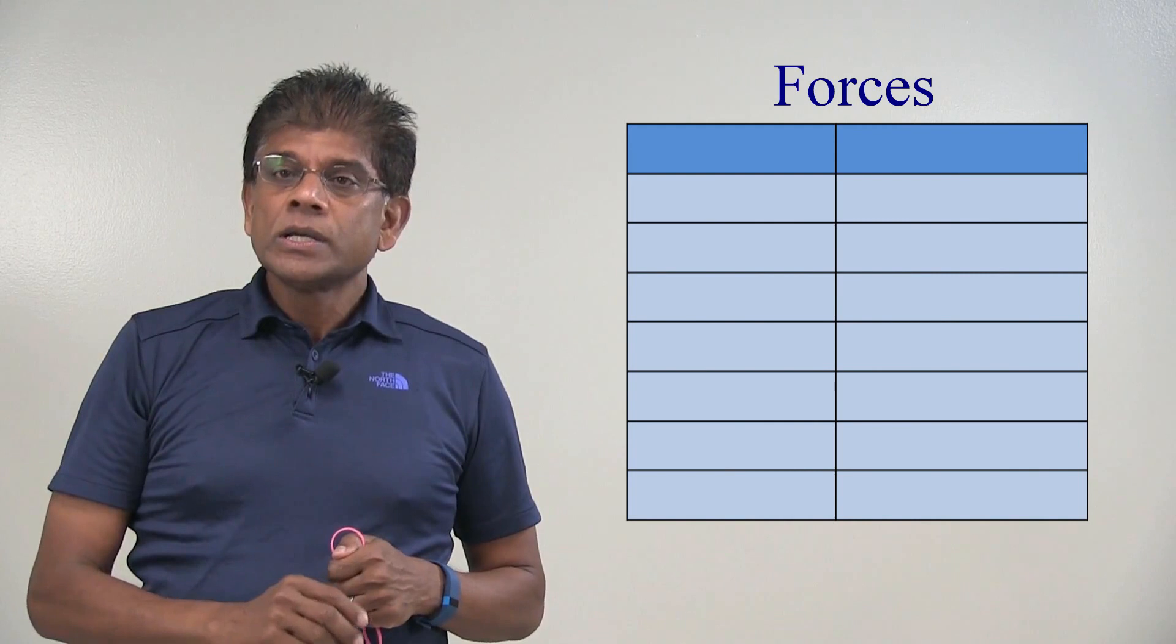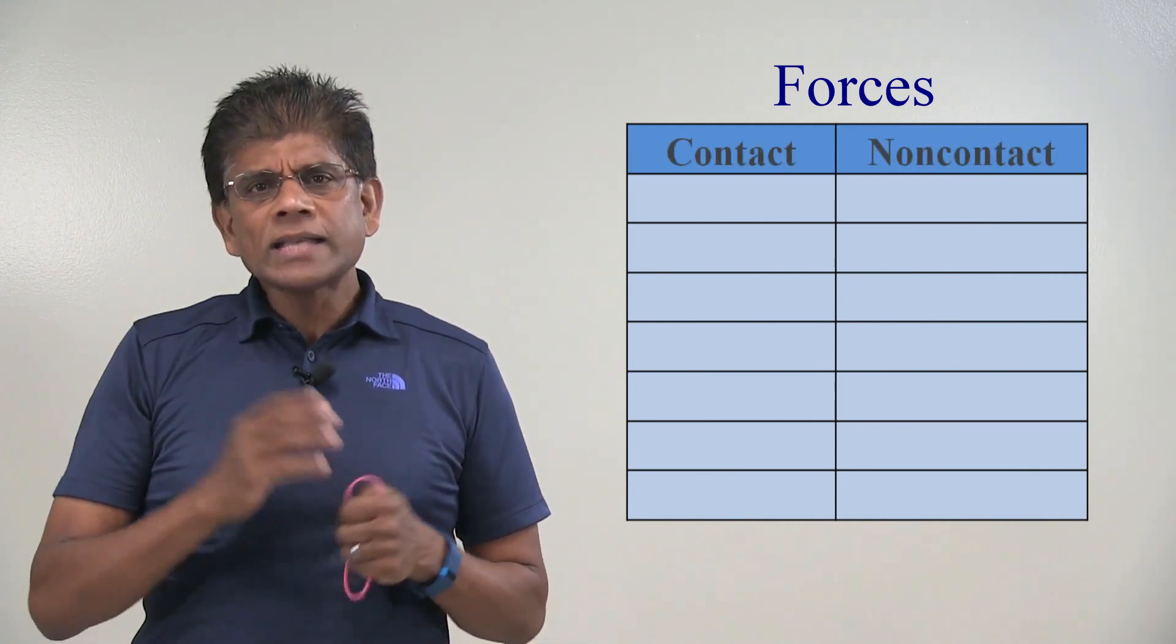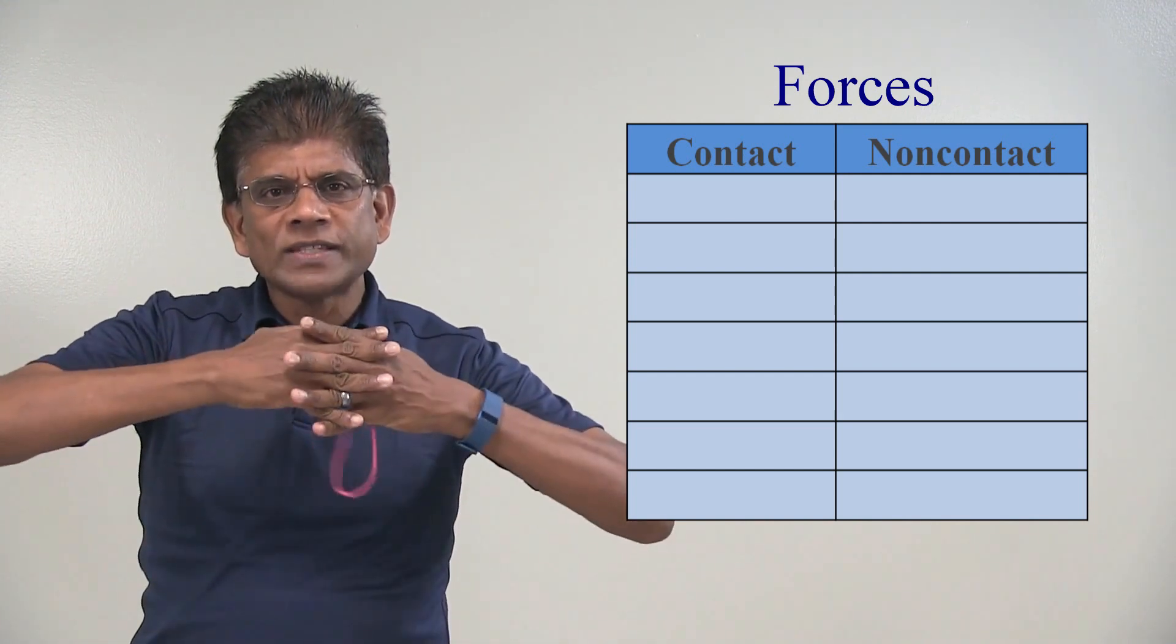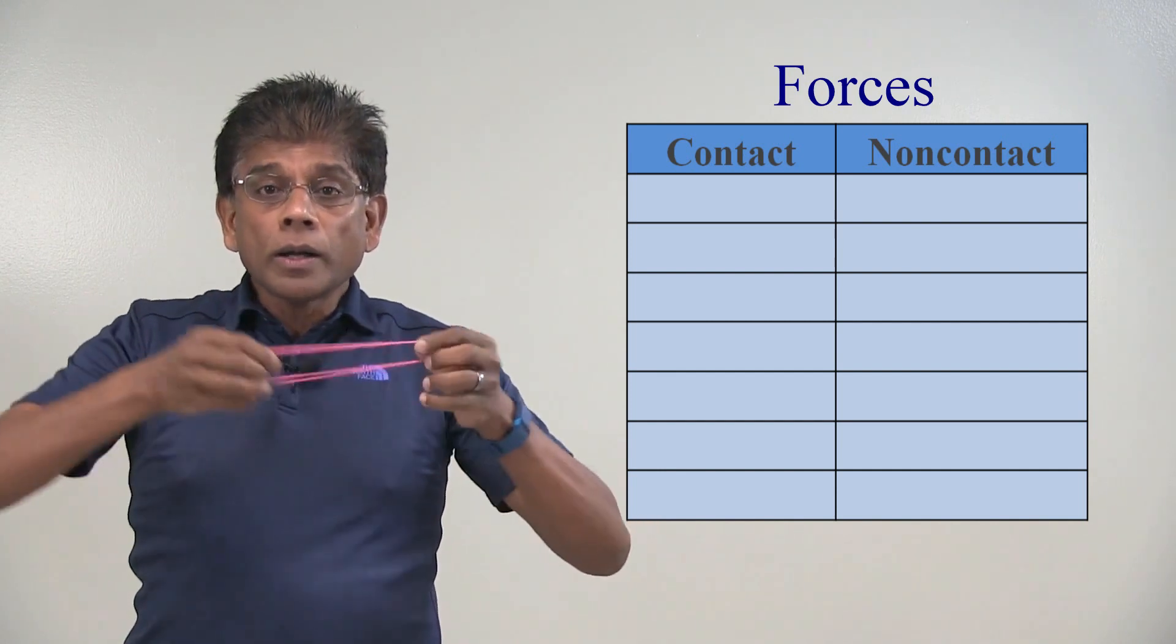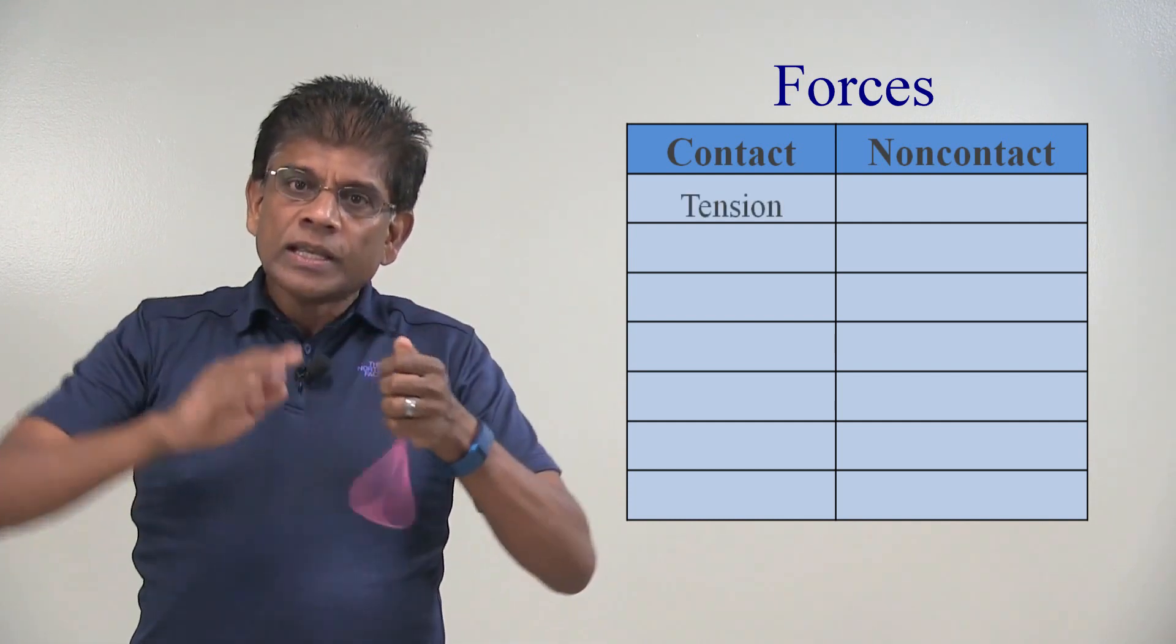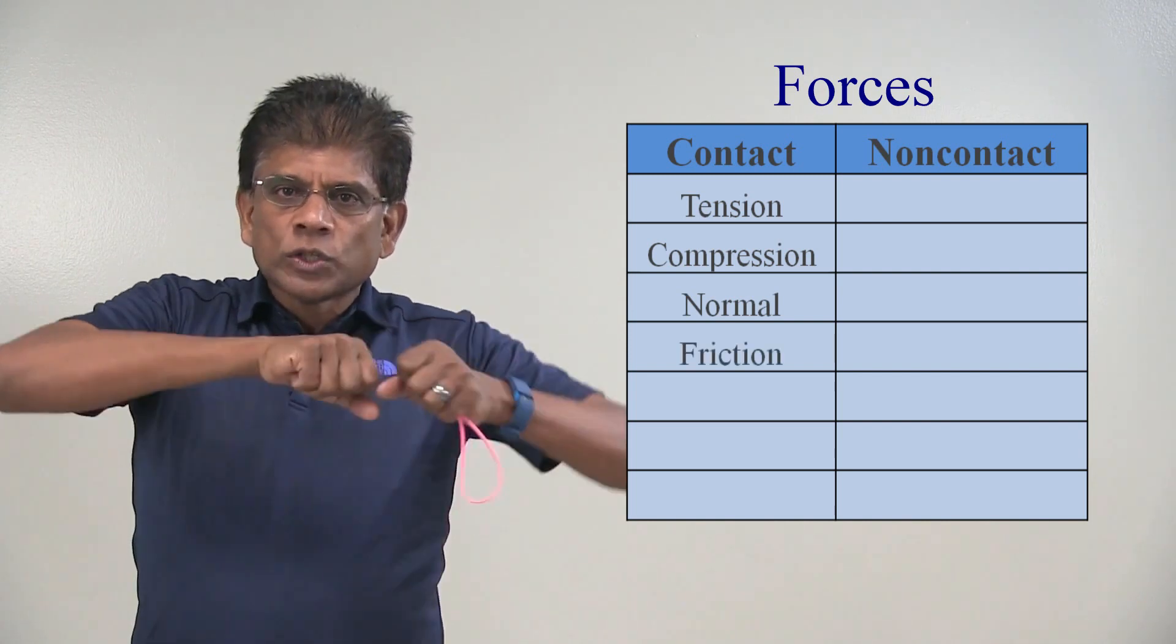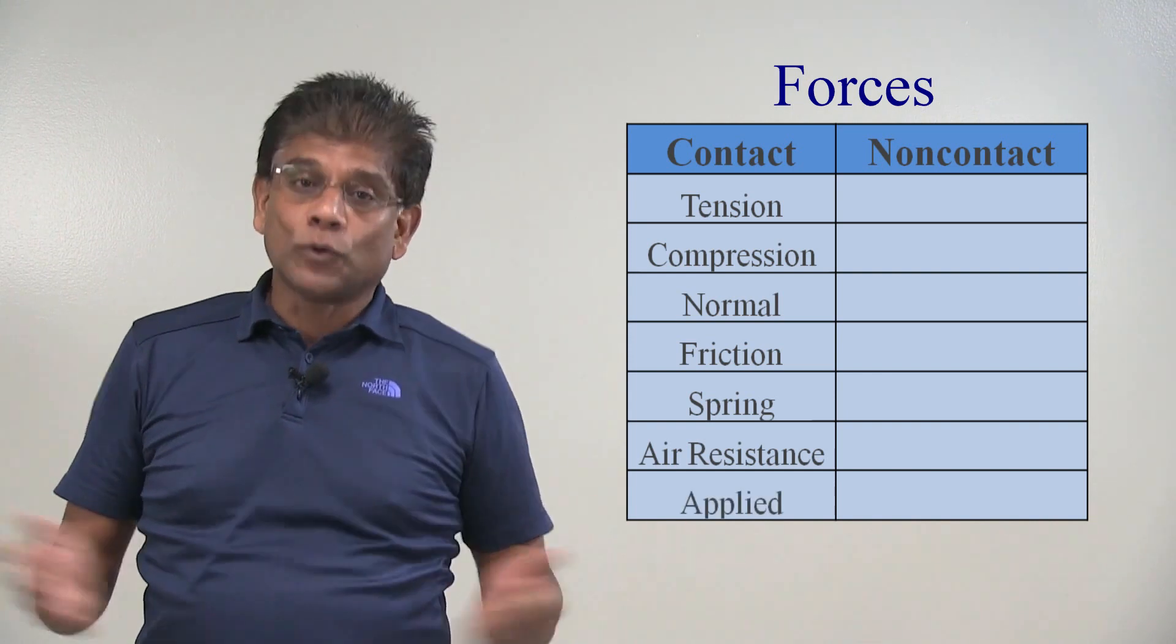For simplicity, we can classify forces into two categories: contact forces and non-contact forces. As the name implies, contact forces occur when two bodies are in physical contact. For example, the force that I am applying on this rubber band is a tensile force. Contact forces are tension forces, compression forces, normal forces, friction forces, spring forces, air resistance forces, and any applied force.